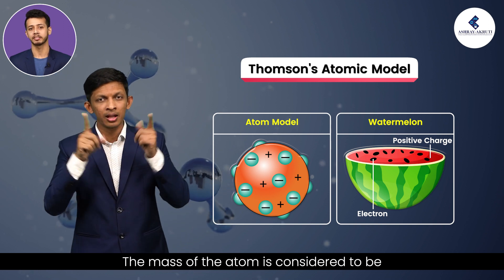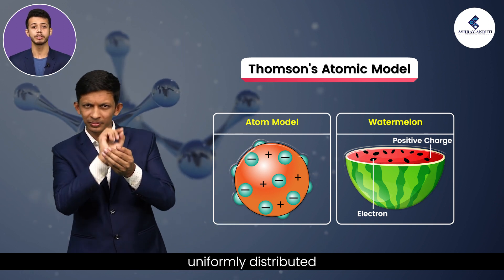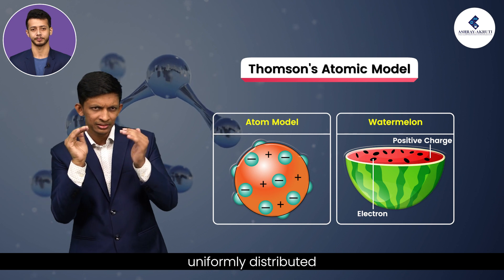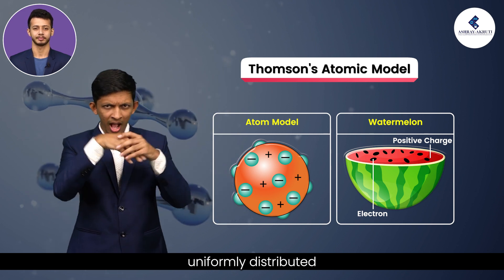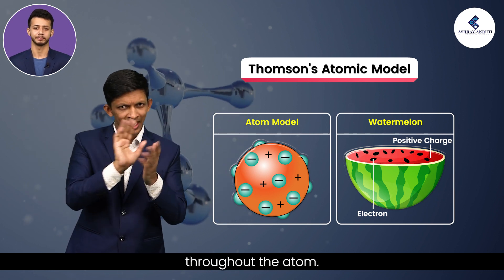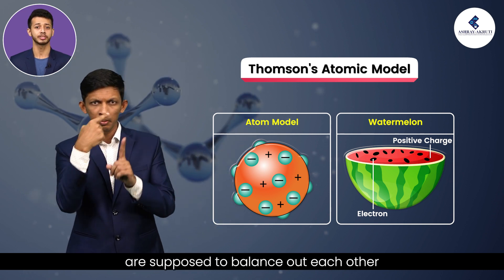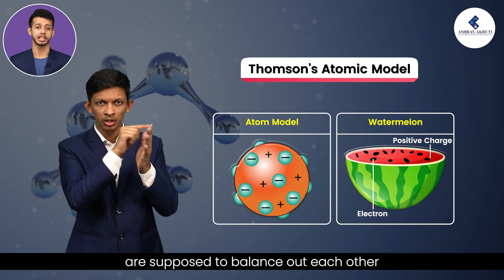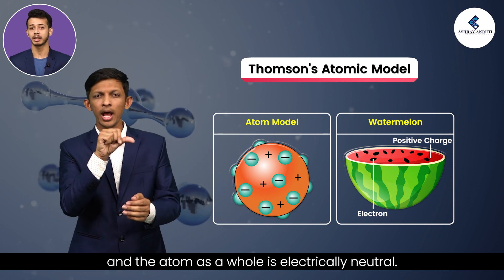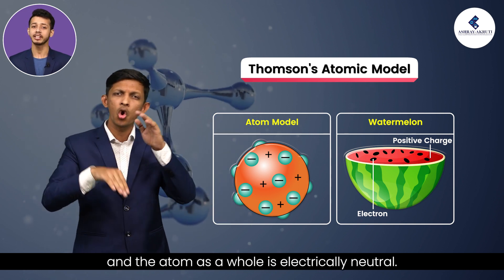The mass of the atom is considered to be uniformly distributed throughout the atom. The negative and the positive charges are supposed to balance out each other and the atom as a whole is electrically neutral.